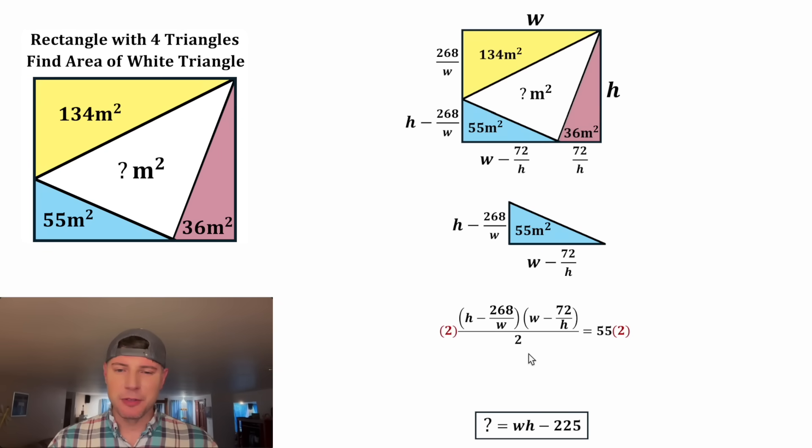And then from here, we can get rid of the fraction by multiplying both sides by two. On the left-hand side, the twos will cancel each other out. And on the right-hand side, 55 times two is 110. Now, let's multiply all this out. We get H times W, which is HW.